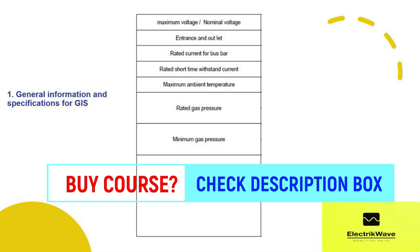We will be discussing about 245 kV GIS of double bus bar and single breaker arrangement, where we will see maximum voltage, nominal voltage, entrance and outlet, rated current for bus bar, rated short time withstand current, maximum ambient temperature, rated gas pressure, and minimum gas pressure.